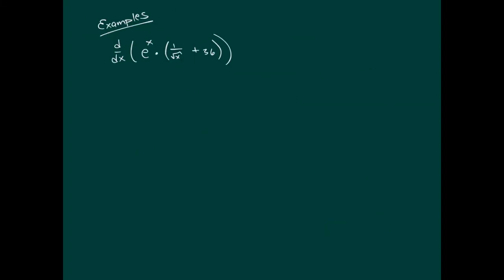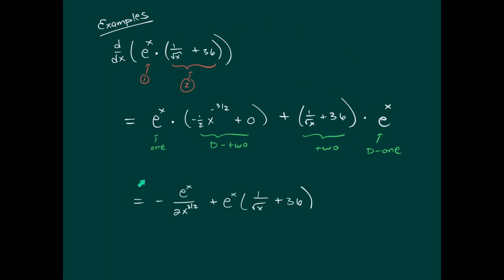Let's look at an example. We've got functions that are multiplied. The first function is e^x. d2 is the derivative of the second part. Then we have 2d1—the second function copied down, and d1, the derivative of e^x is e^x. You might want to clean it up a bit for the final answer.